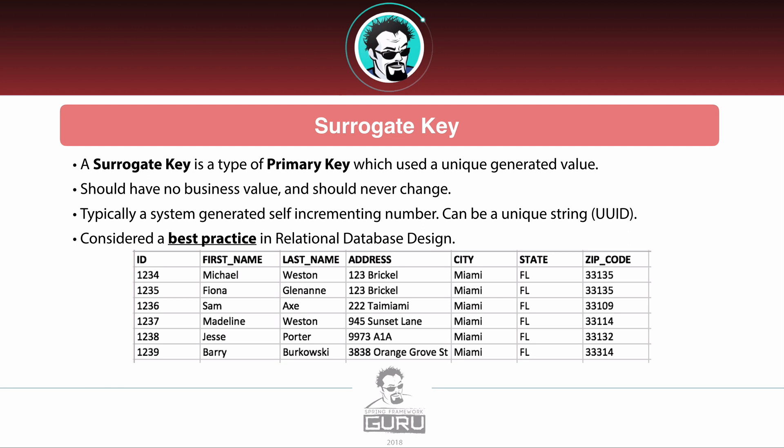A UUID is a long string of random alphanumeric characters — like grains of sand, it's a very, very unique value. Using a surrogate key is considered a best practice in relational database design.